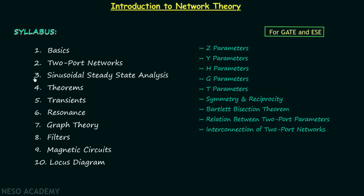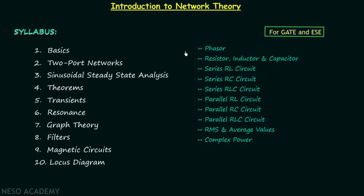Chapter number 3 is Sinusoidal Steady State Analysis. We will start with phasors and then perform steady state analysis of resistor, inductor, and capacitor. Then we will perform steady state analysis of series RL circuit, series RC circuit, series RLC circuit, parallel RL circuit, parallel RC circuit, and parallel RLC circuit. After this I will explain root mean square value and average value, and the final topic will be complex power.